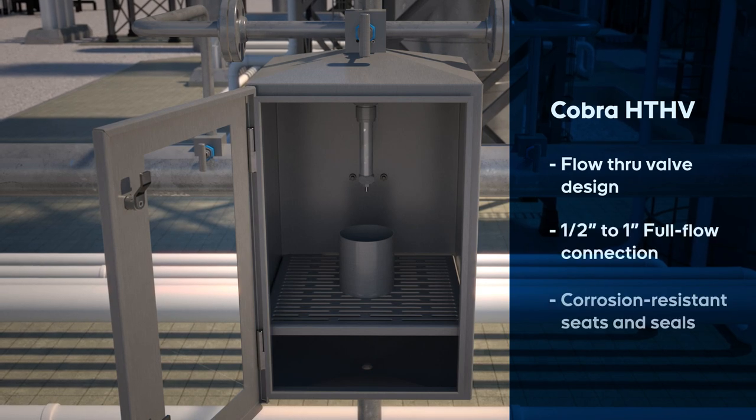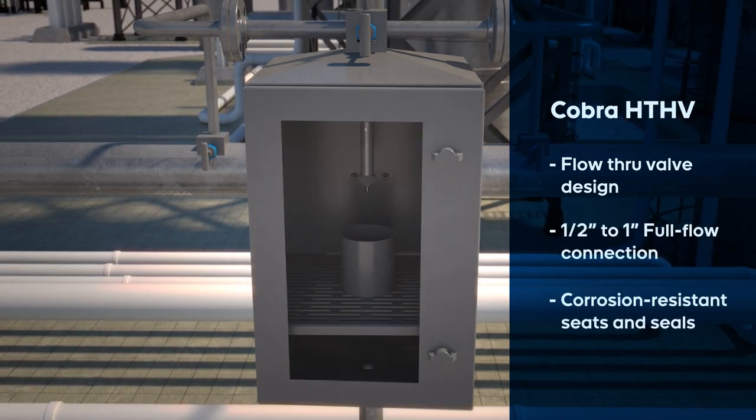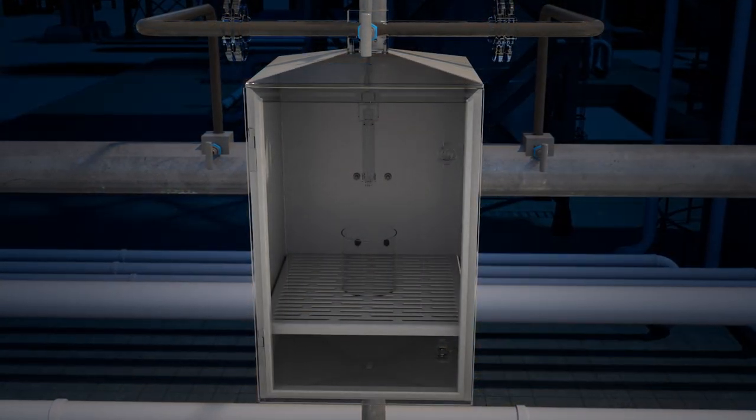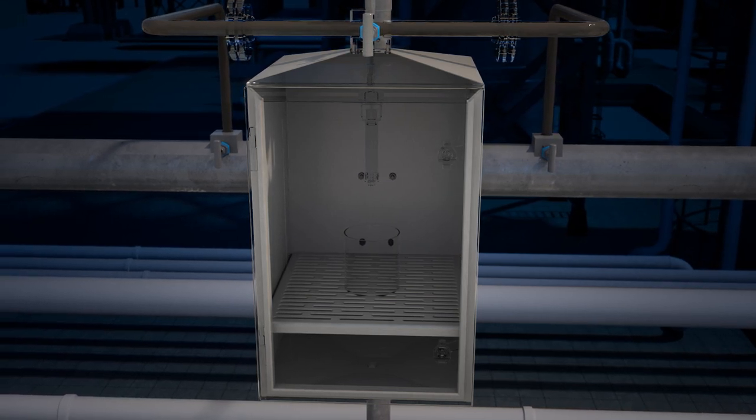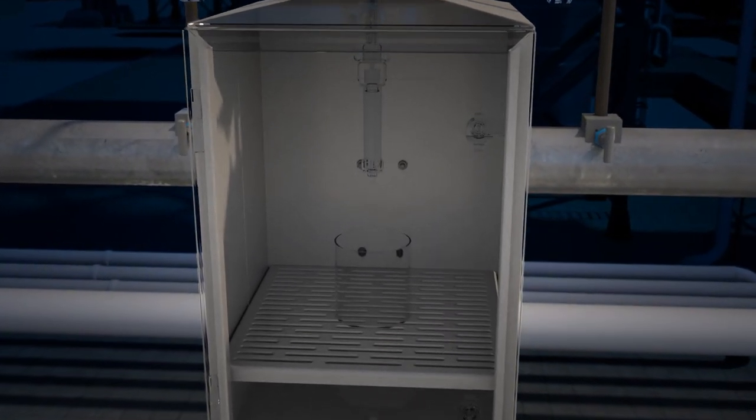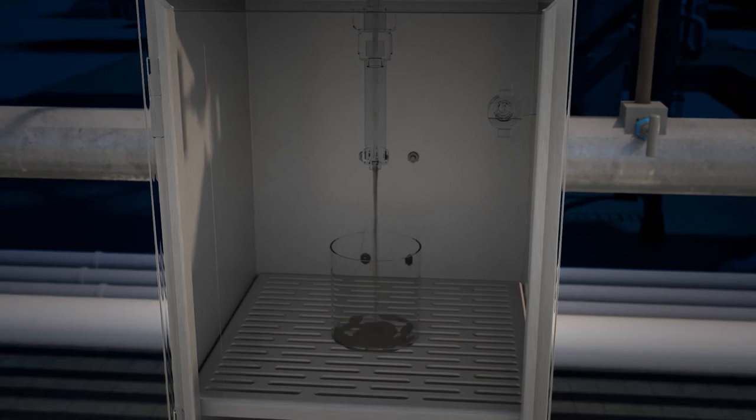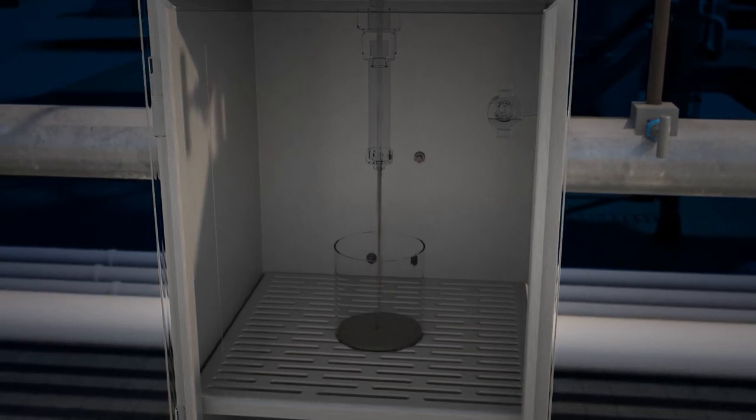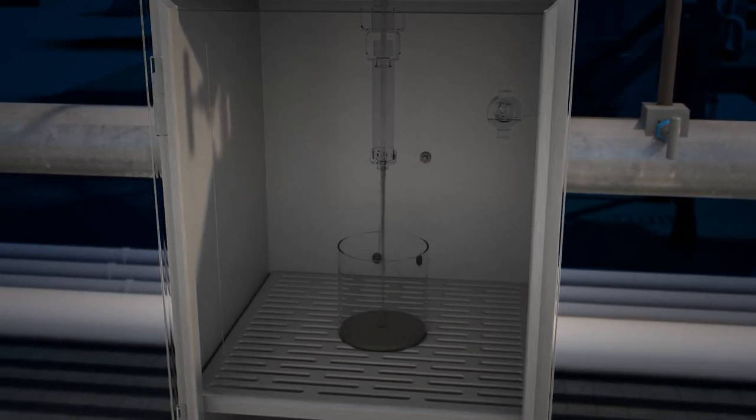The Cobra HTHV offers an enclosure to protect the operator while providing emissions-free sampling. Spills are minimized and controlled to the drain port. A viewing window in the enclosure provides full visibility into the sampling process while protecting the operator from exposure to spills and emissions.